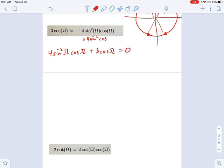Now, I factor out my GCF. That's cosine. Cosine of omega. And what's left on the inside? That's 4 sine squared plus 3, it looks like. 4 sine squared plus 3. And now, we solve each of these separately.